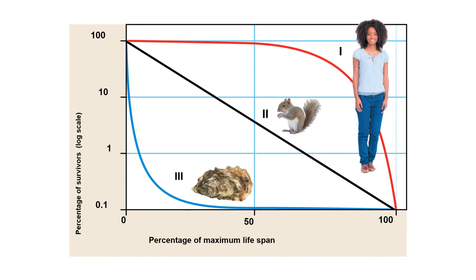Here we have three examples: humans on the red line showing the Type 1 survivorship curve — very good care for offspring, one or two at a time, with a very good chance of surviving until old age. In the middle, something like a squirrel has a fairly even chance of survivability throughout its life. The third example shows very low chance of survival as a young individual, but once past that critical period, the organism can live for a very long time.